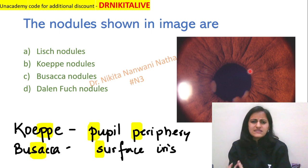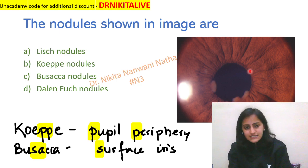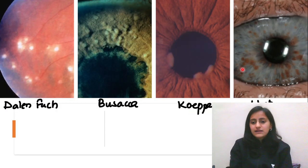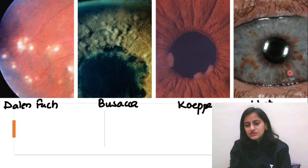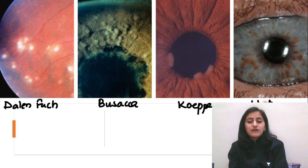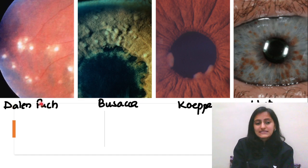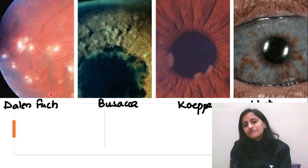Both of these are seen in granulomatous uveitis. Lish nodules — where are the Lish nodules? These are the Lish nodules, the brown colored ones which are seen in neurofibromatosis 1. And we have the Dallin-Pix nodules which are seen in sympathetic ophthalmia.